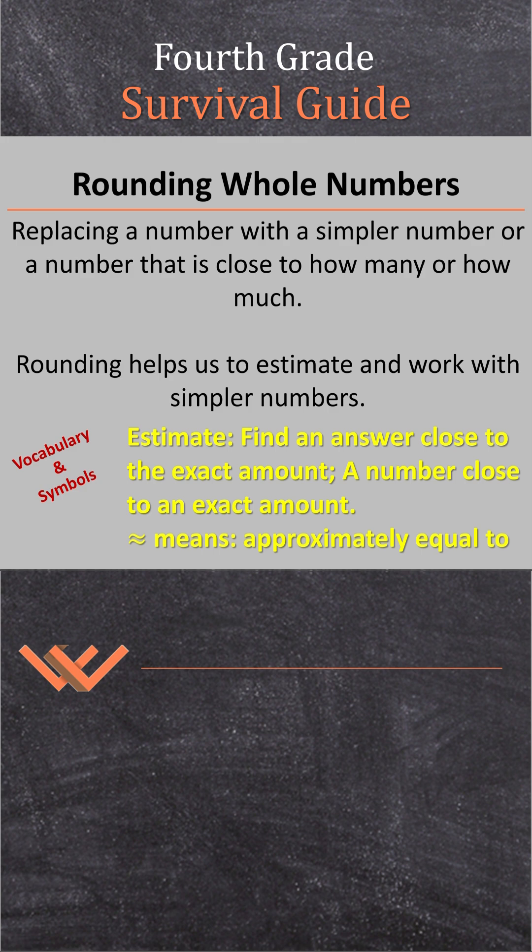Well, rounding helps us to estimate and work with simpler numbers. Our vocabulary: estimating, find an answer close to the exact amount, or a number close to an exact amount. And then I have this symbol here with two swiggly lines, one on top of the other. And that means approximately equal to, or it could also mean about.